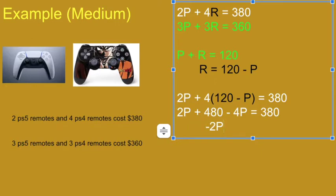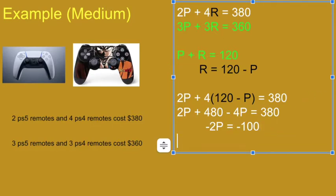Subtract 480 from both sides. Negative 100. 380 minus 480, negative 100. Divide both sides by negative 2.